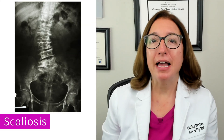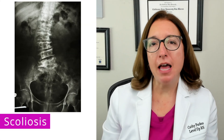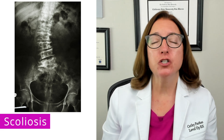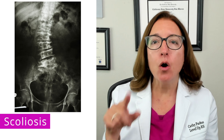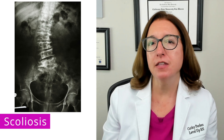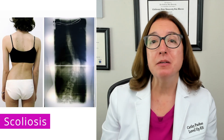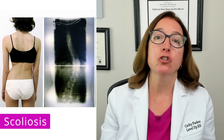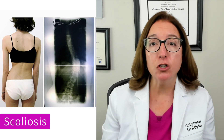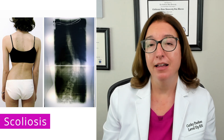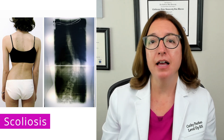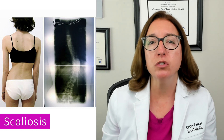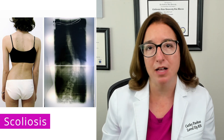Scoliosis is characterized by abnormal lateral curvature of the spine and spinal rotation, which results in an S or C-shaped curvature of the spine. Signs and symptoms of scoliosis include asymmetry of the child's shoulder height, scapular shape, or hip height. And because the child has a change in their posture, it may cause their clothes to not lay or fit very well.